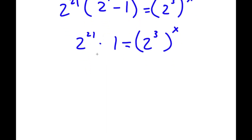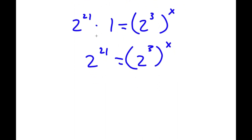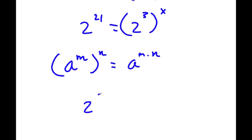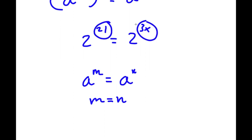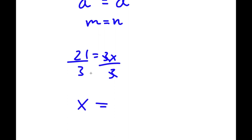Anything times 1 is simply itself, so 2 to the power of 21 times 1 is simply 2 to the power of 21, equal to 2 to the power of 3 to the power of x. If I have something in the form a to the power of m to the power of n, this equals a to the power of m times n. So 2 to the power of 3 to the power of x equals 2 to the power of 3x. Now if a to the power of m equals a to the power of n, then m equals n, so 21 equals 3x. Dividing both sides by 3, x equals 21 divided by 3, which is 7. So x equals 7 is my answer.